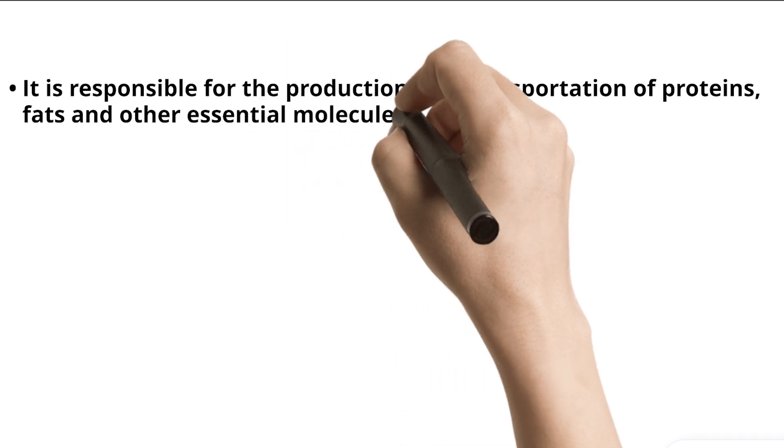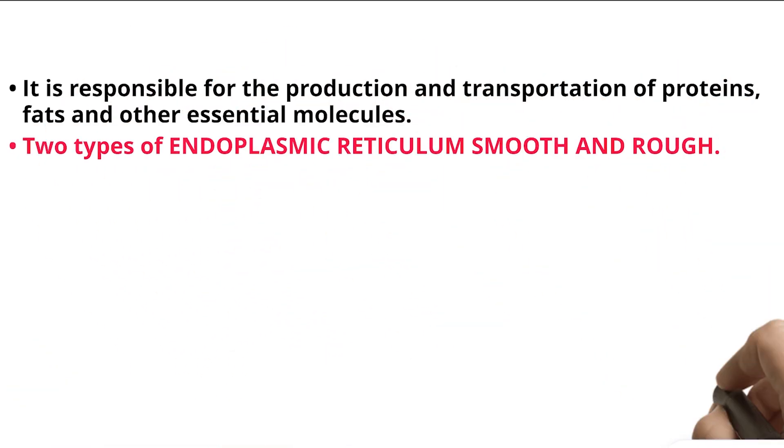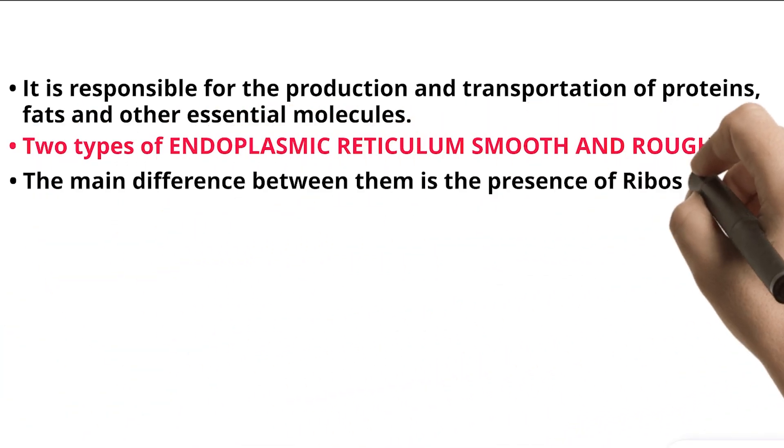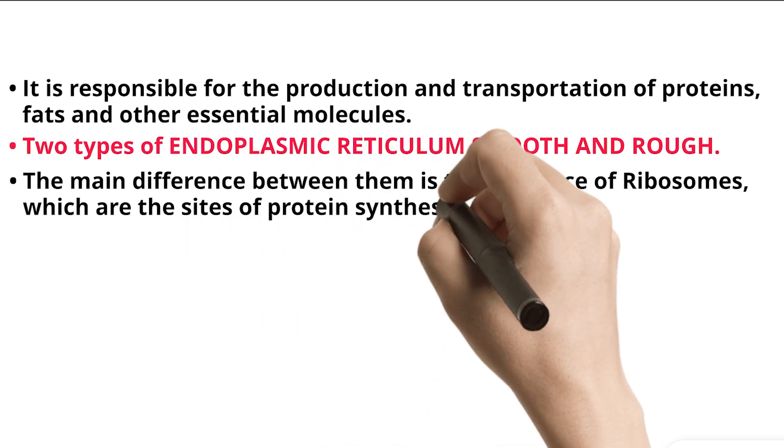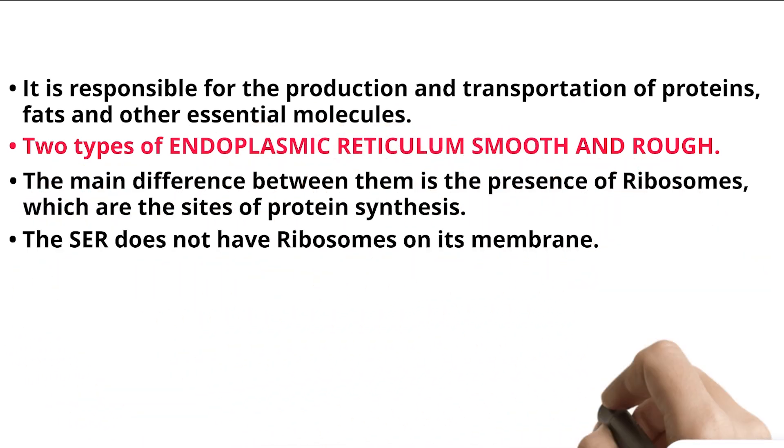It is responsible for the production and transportation of proteins, fats, and other essential molecules. Two types of endoplasmic reticulum: smooth and rough. The main difference between them is the presence of ribosomes, which are the sites of protein synthesis. The SER does not have ribosomes on its membrane.